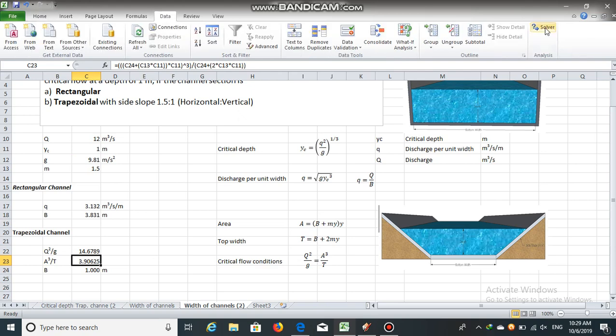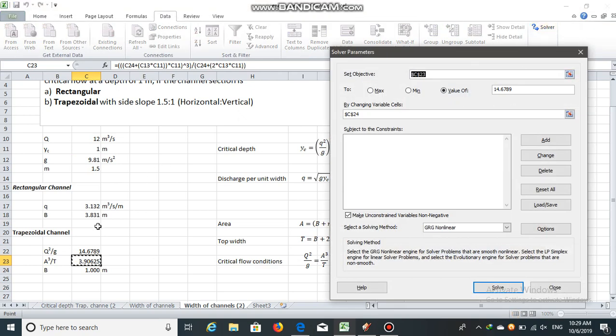Data solver. The value of a cube by t should be equal to 14.6789 by changing this cell, bottom width.